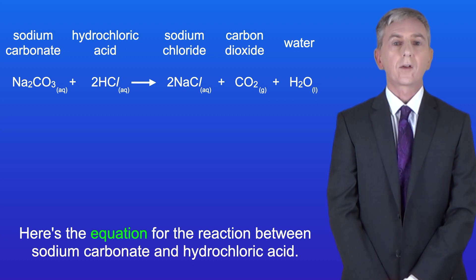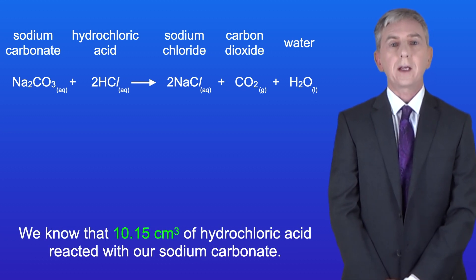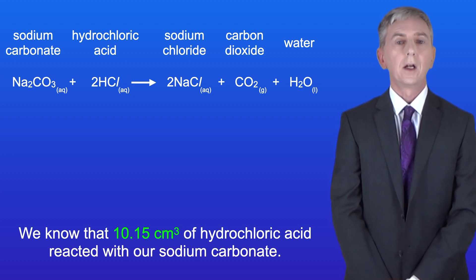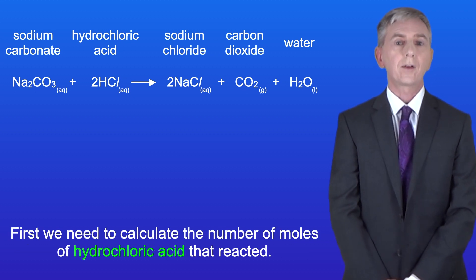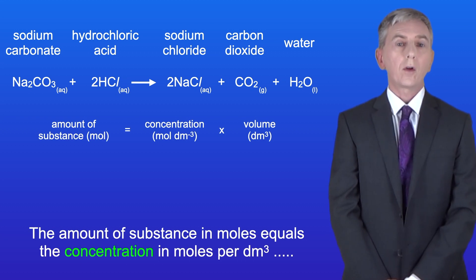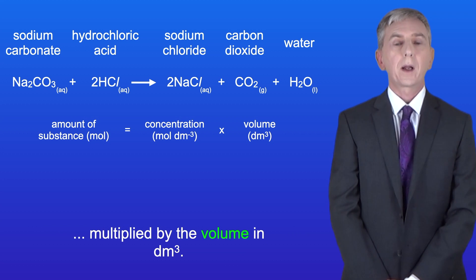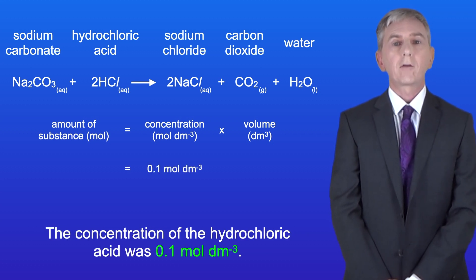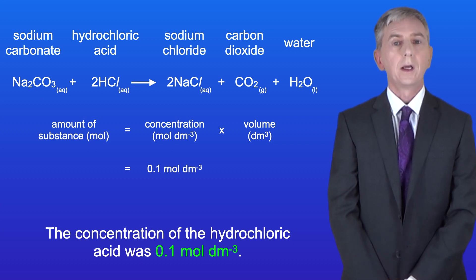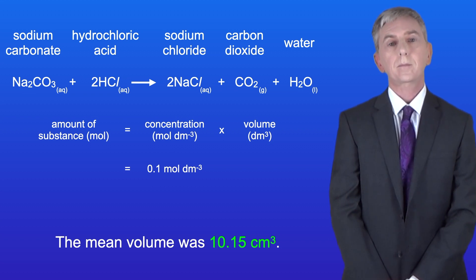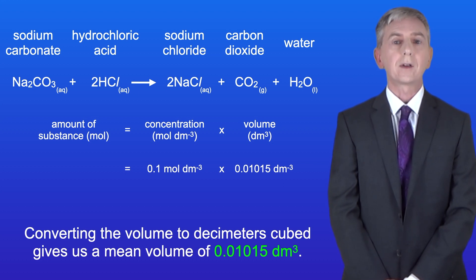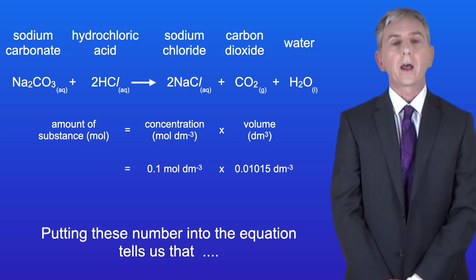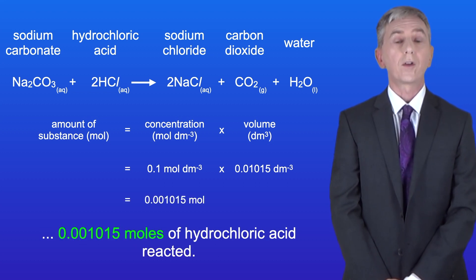Here's the equation for the reaction between sodium carbonate and hydrochloric acid. We know that 10.15 cm³ of hydrochloric acid reacted with our sodium carbonate, and we're going to use this to calculate the number of moles of sodium carbonate. First we calculate the moles of HCl: moles equals concentration multiplied by volume in dm³. The concentration was 0.1 mol/dm³ and the mean volume converts to 0.01015 dm³, giving us 0.001015 moles of hydrochloric acid.